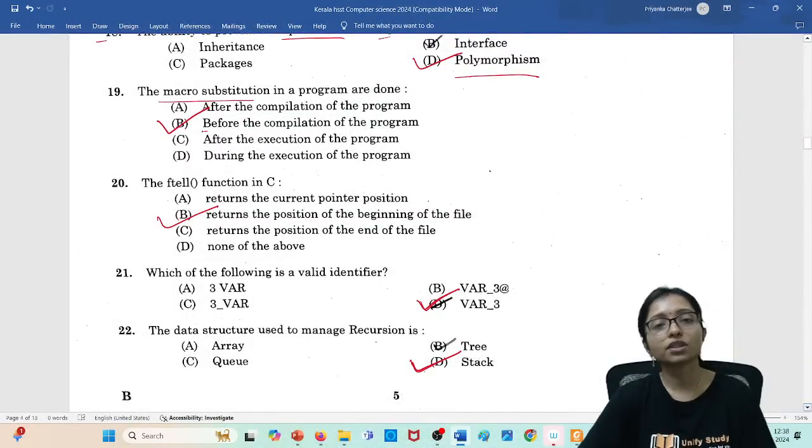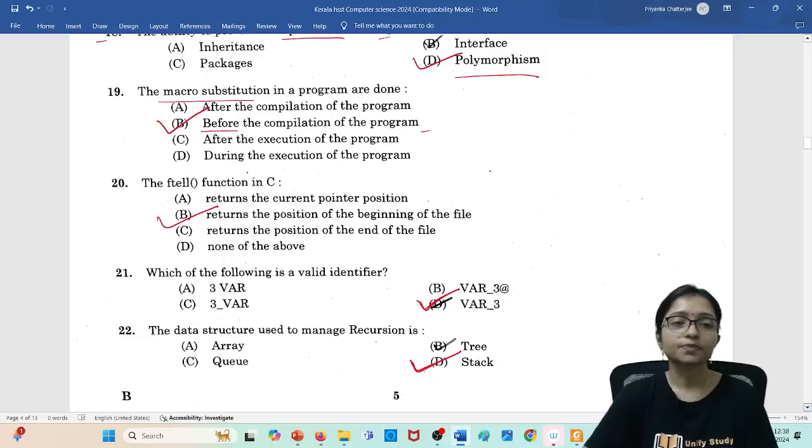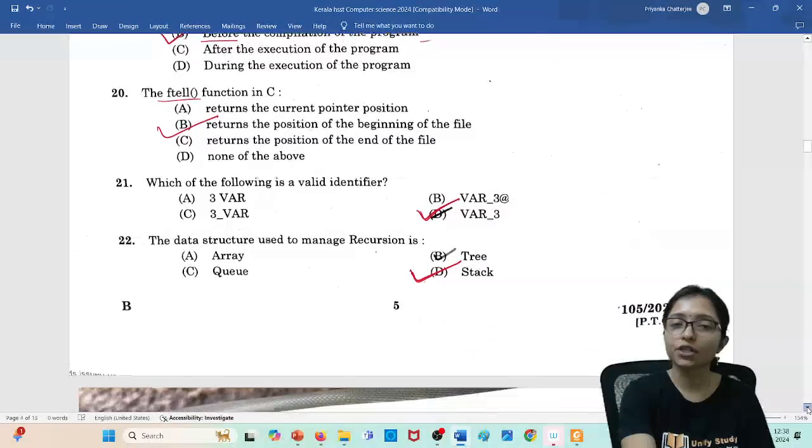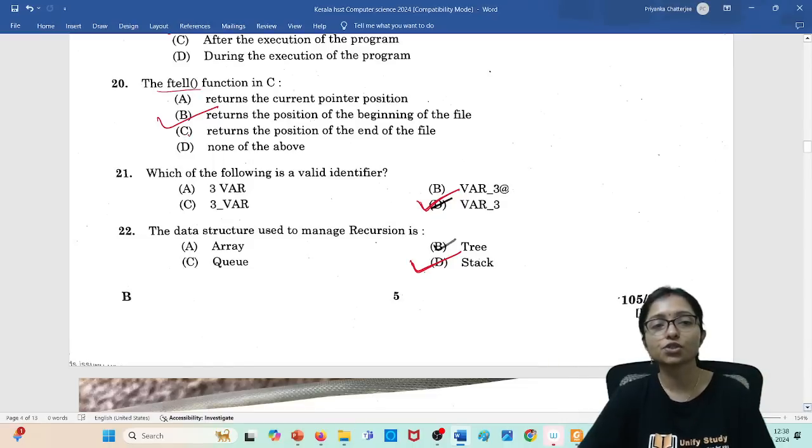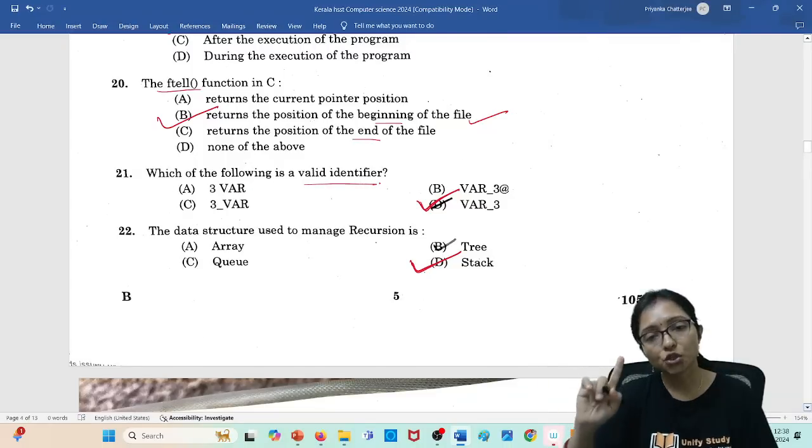Macro substitution should be done before the compilation of the program. ftell returns the position of the current file position. But here both options are given: return the position of the beginning of the file and end of the file. So I hope it is correct answer: beginning of the file should be the correct answer and most accurate answer.